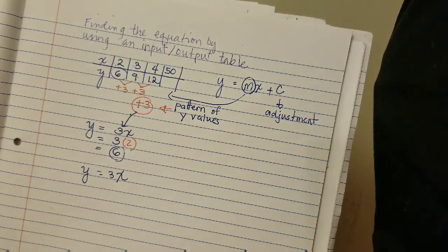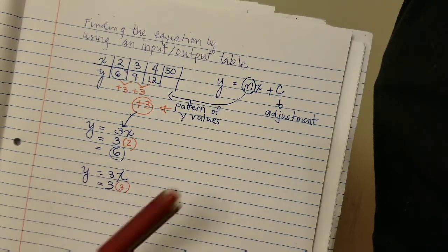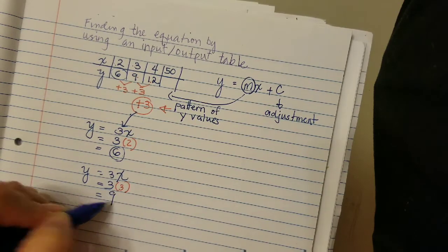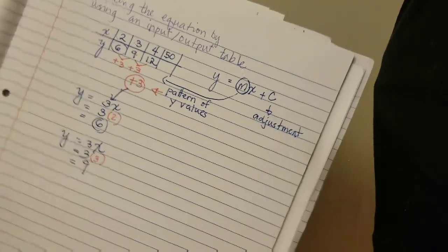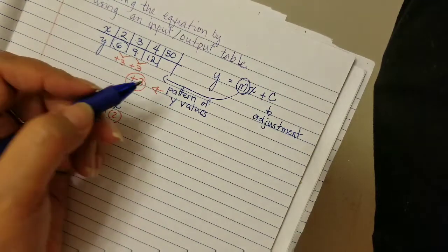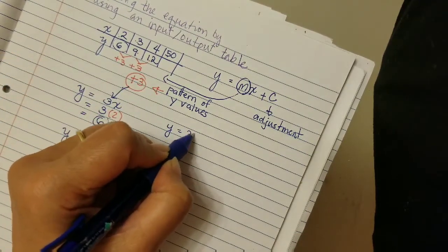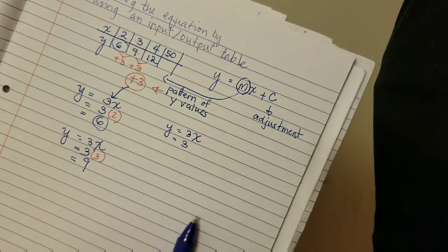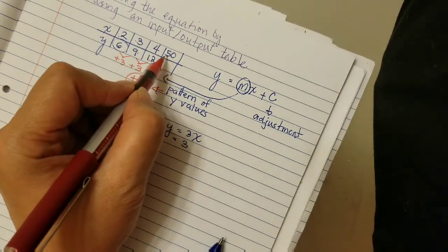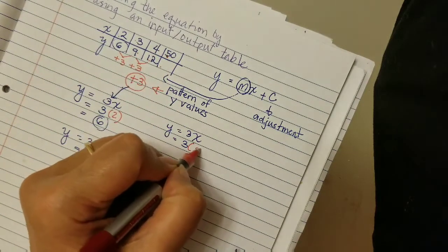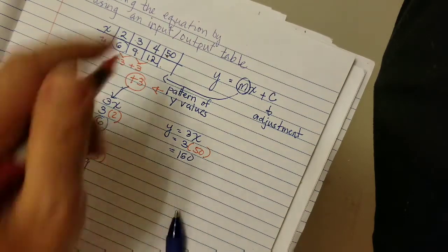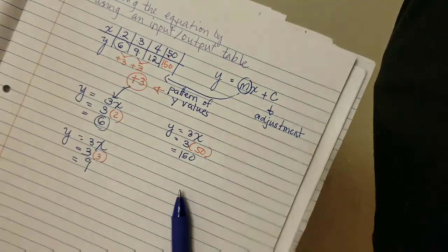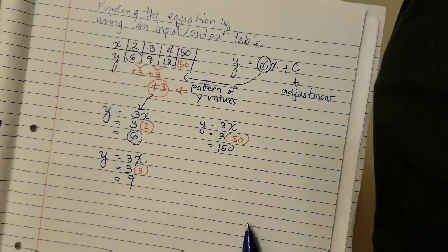You always need to check your answer — that's the beauty of algebra. Let's try substituting three: y equals three times three, therefore y equals nine. And how do we find the 50th value? No problem — substitute x equals 50 into y equals three x. The answer is 150. That one's easy because no adjustment is needed.